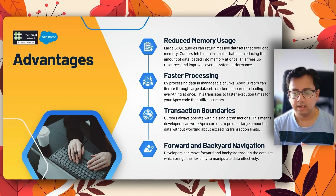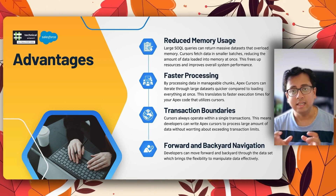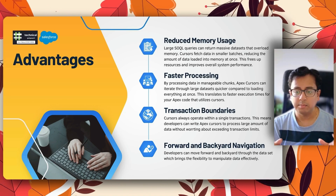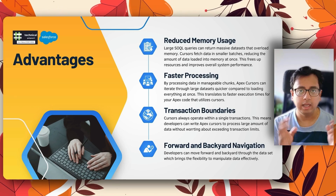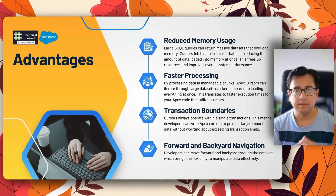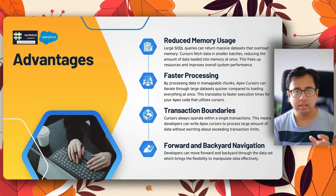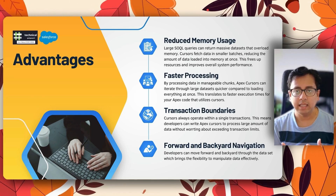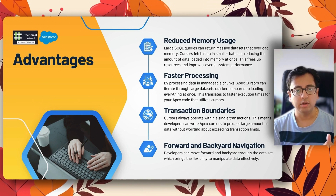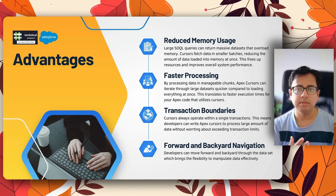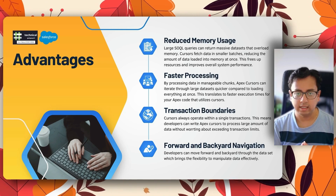Transaction boundaries is another advantage. The cursor operates within a single transaction, meaning you can write your Apex Cursor to process large amounts of data without worrying about exceeding the transaction limit. The fourth advantage is forward and backward navigation. With Apex Cursor, you have the option to go forward and go backward. In Batch Apex, you can only go forward — you cannot go backward. With Apex Cursor, this bidirectional navigation gives huge flexibility to manipulate data more effectively.